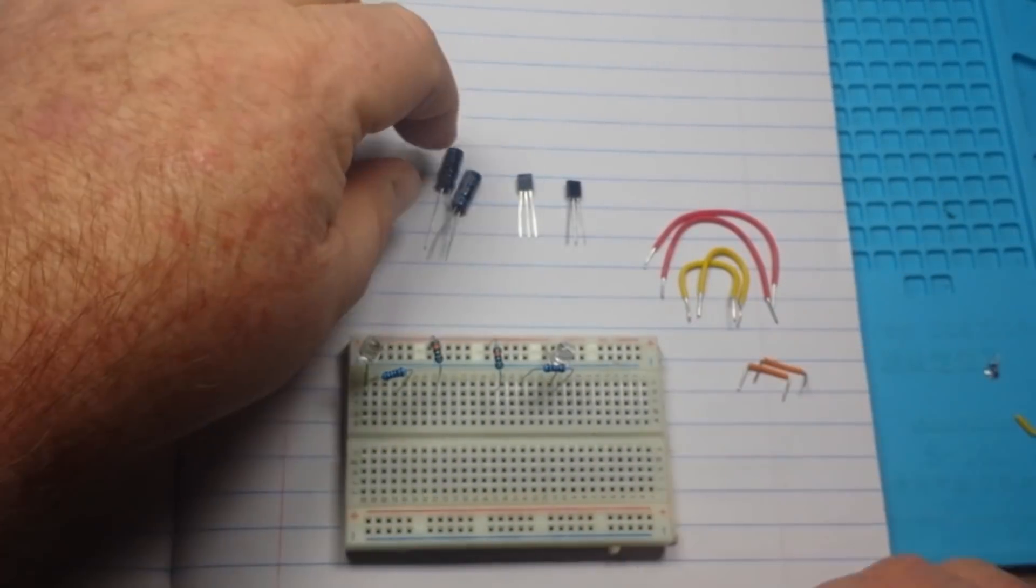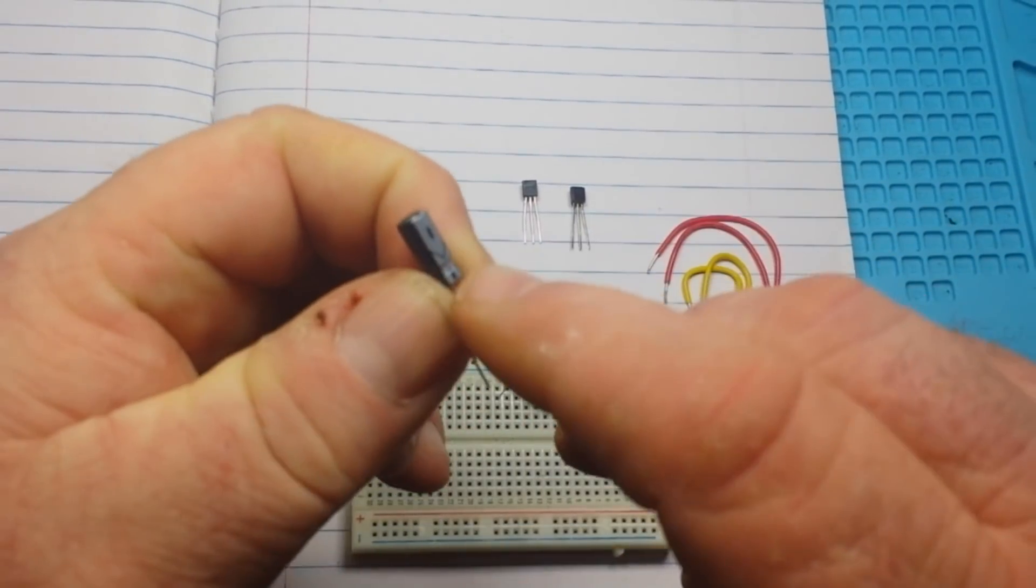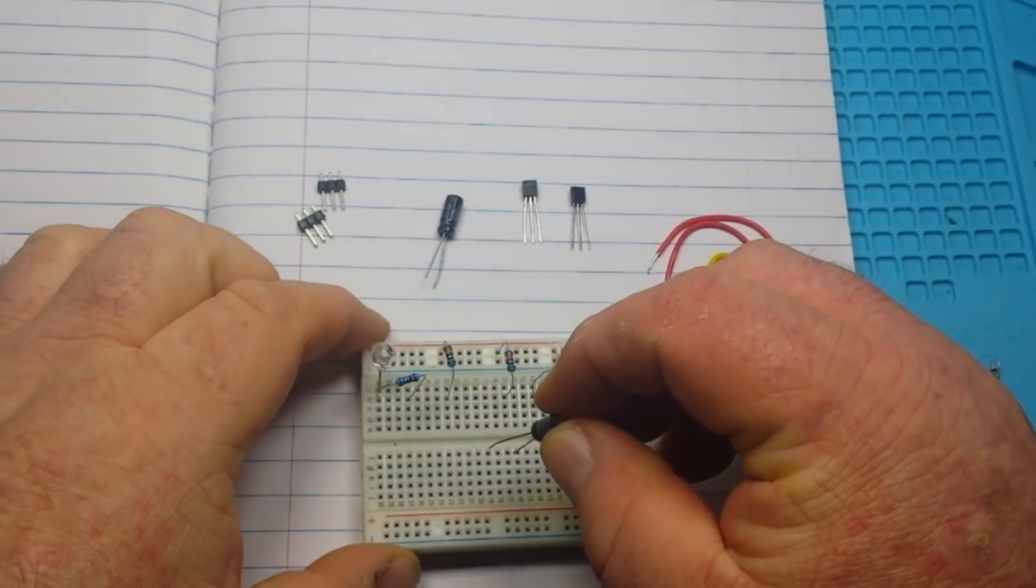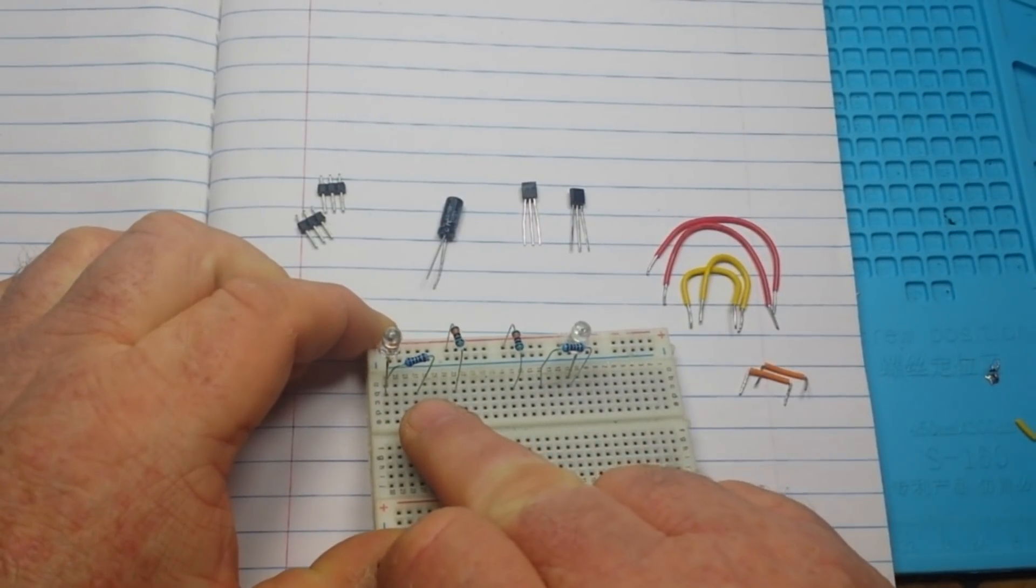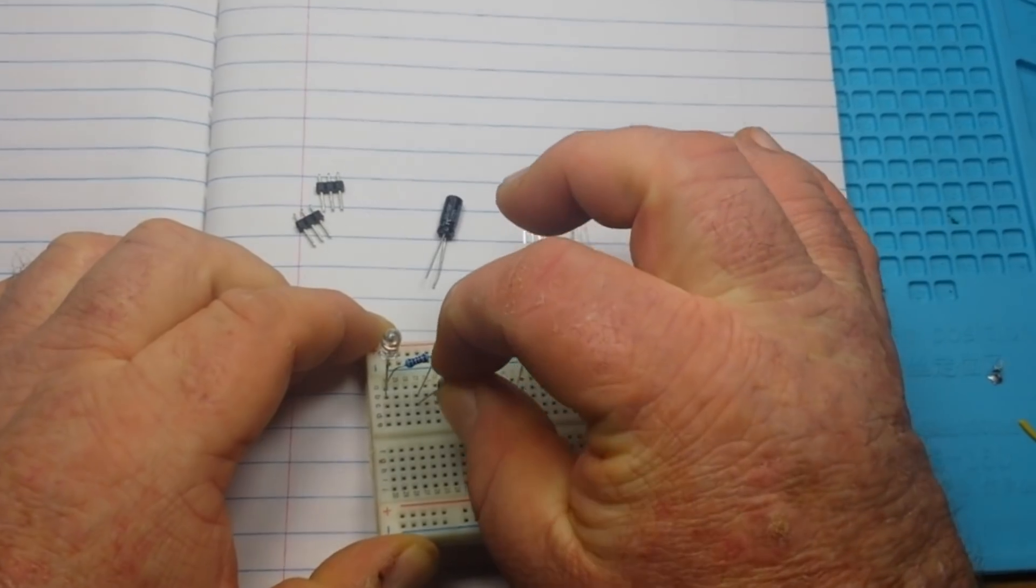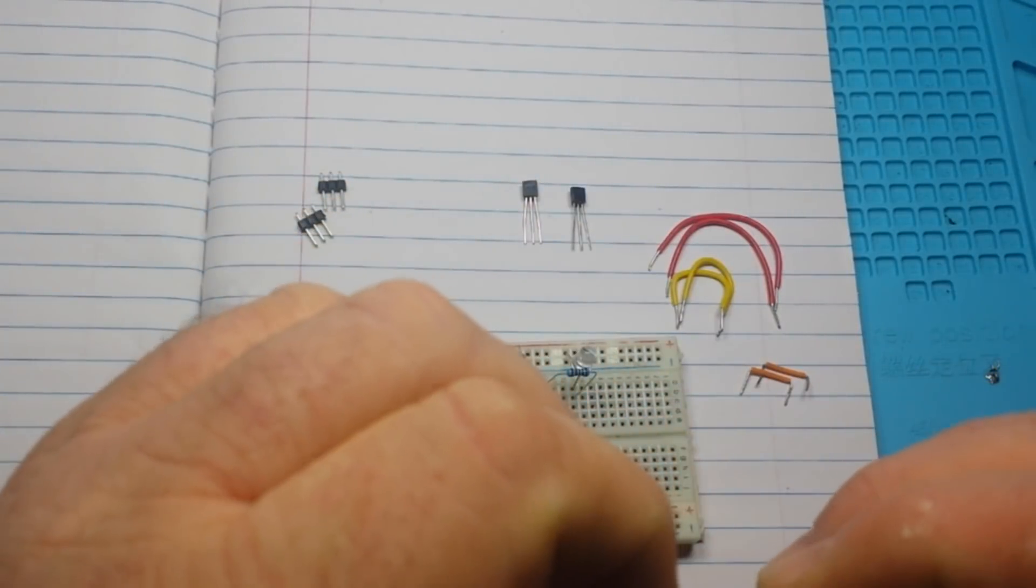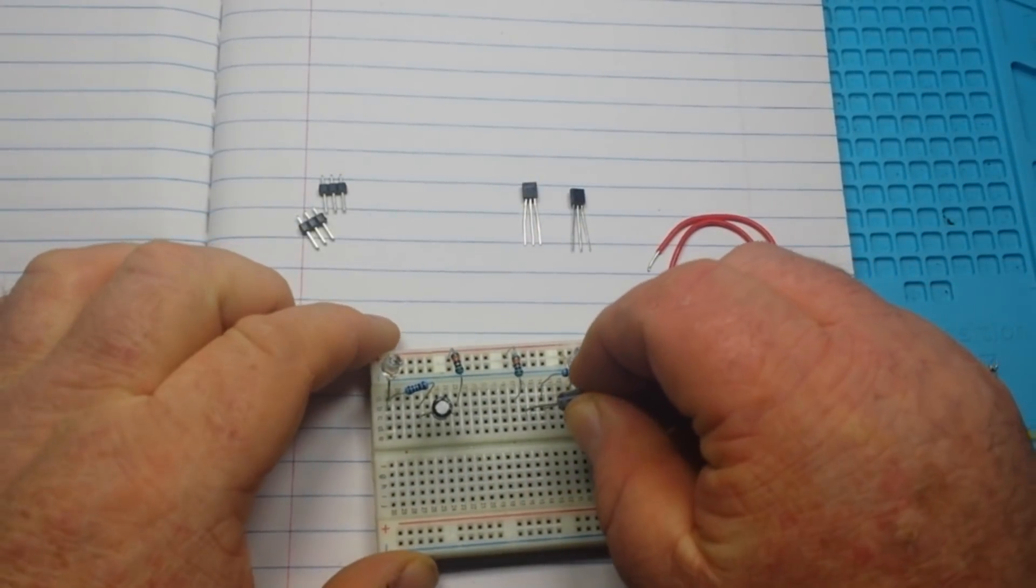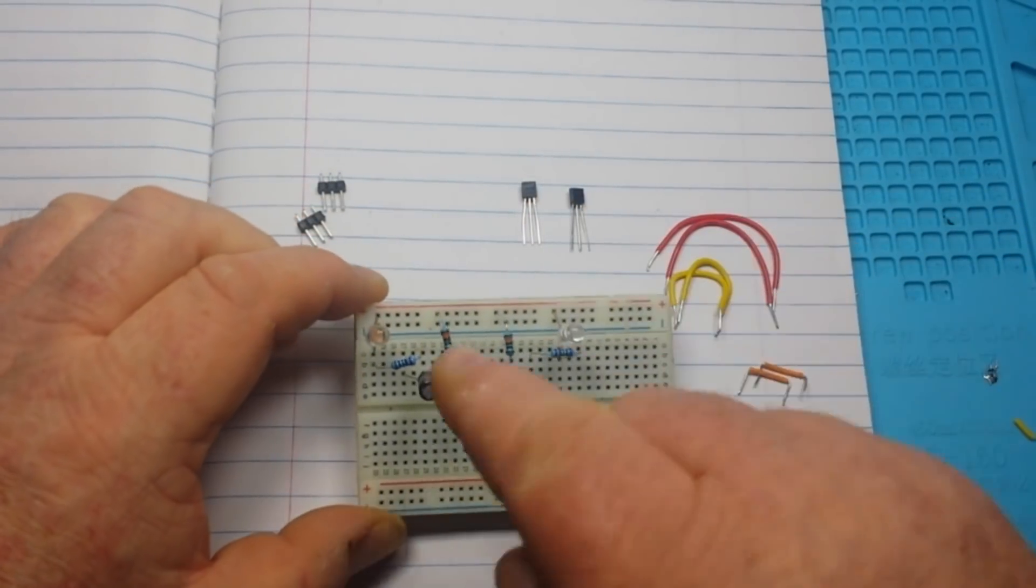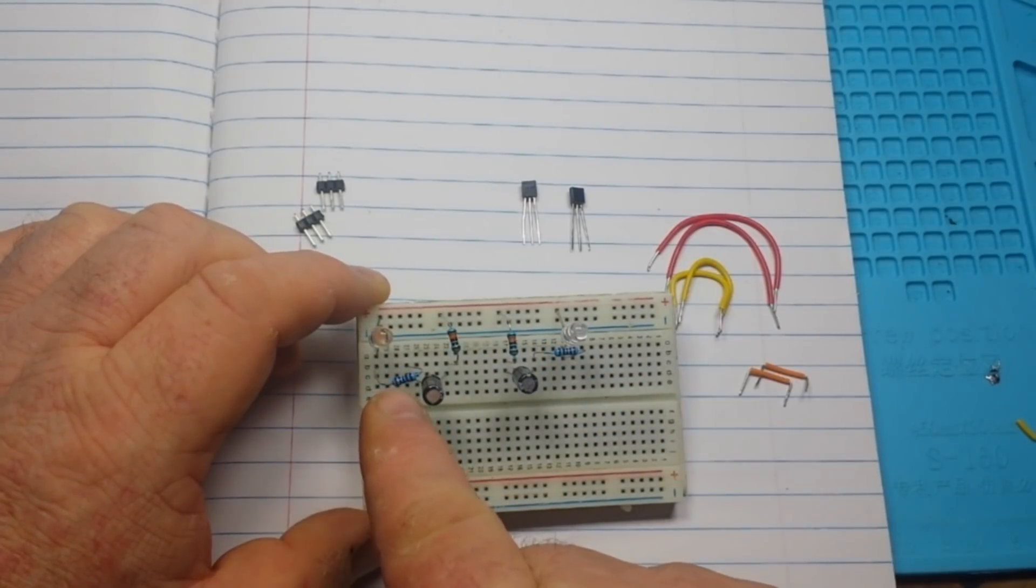Then we're going to take our capacitors. The negative side is the stripe side, positive side goes to one side of the resistor attached to the LED, the negative side goes to the other side. It's very important you put them in this way, if you don't put them in this way it's not going to work. So basically we simply created a little circuit here from VCC through the resistor through the capacitor back to VCC on both sides, they're mirrored.